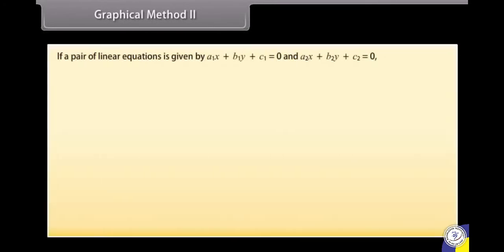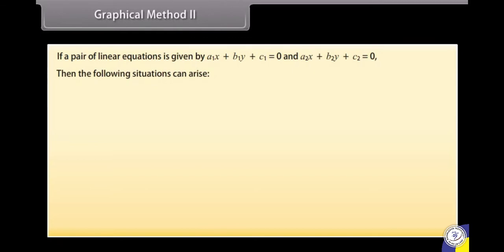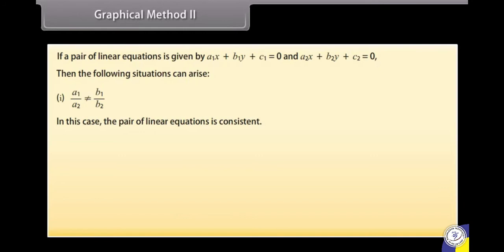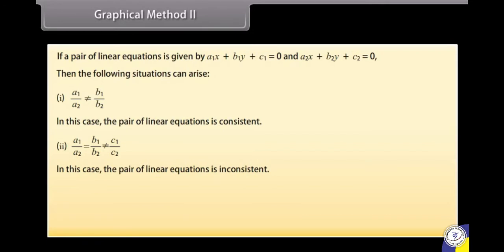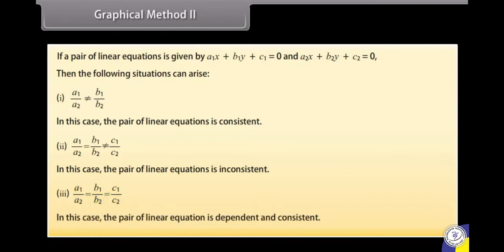Graphical method continued. If a pair of linear equations is given by A1x + B1y + C1 = 0 and A2x + B2y + C2 = 0, three situations can arise: 1) if A1/A2 ≠ B1/B2, the pair is consistent; 2) if A1/A2 = B1/B2 ≠ C1/C2, the pair is inconsistent; 3) if A1/A2 = B1/B2 = C1/C2, the pair is dependent and consistent.